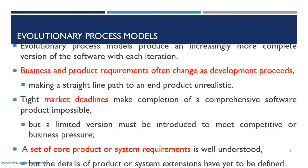A set of core product or system requirements is well understood, but the details of product or system extensions have yet to be defined. For a small or core product, the initial stage requirements may be clear, but complete requirements may not be fully known upfront.